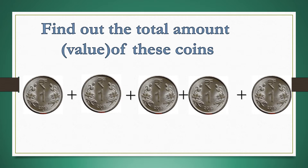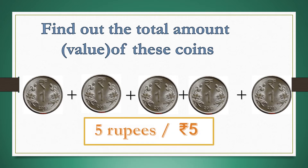Find out the total amount or value of these coins. Children, observe carefully. Here we see that 1 rupee coins are given. There are five 1 rupee coins. When we count them together, we get 5 rupees.